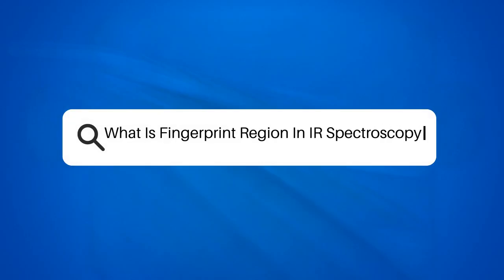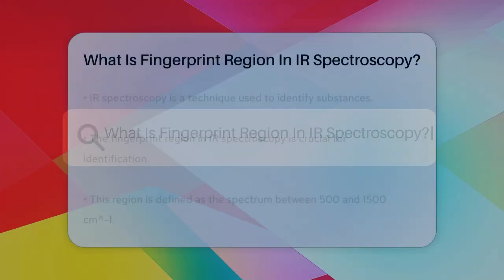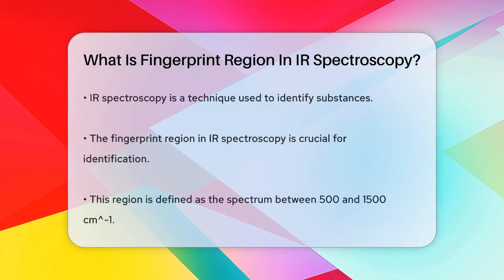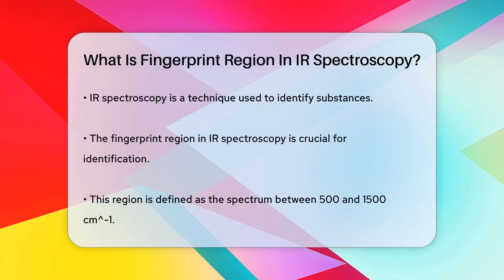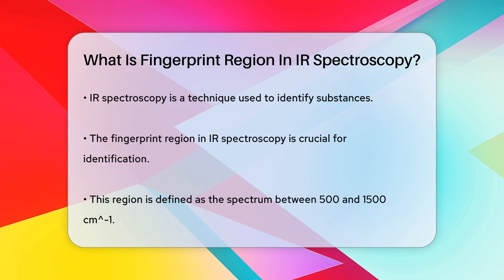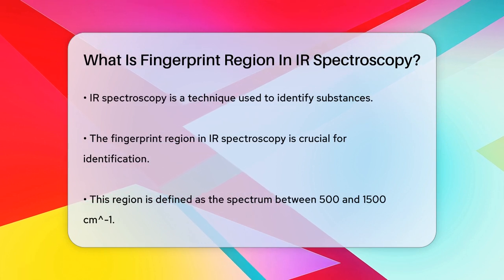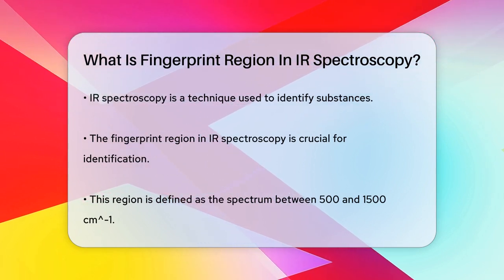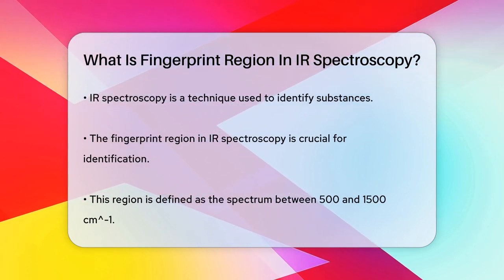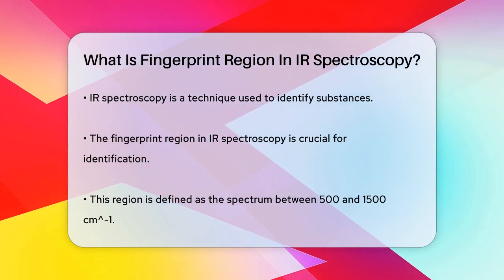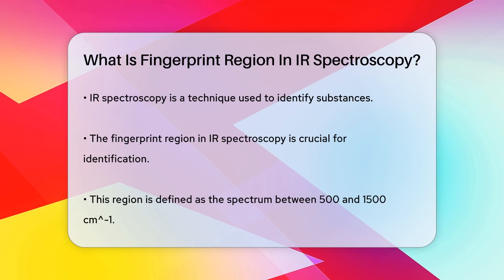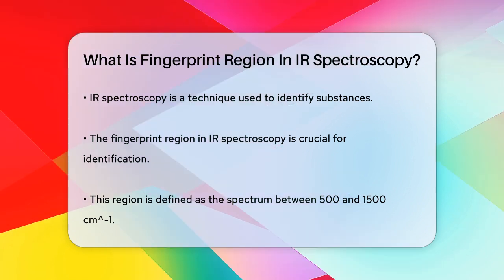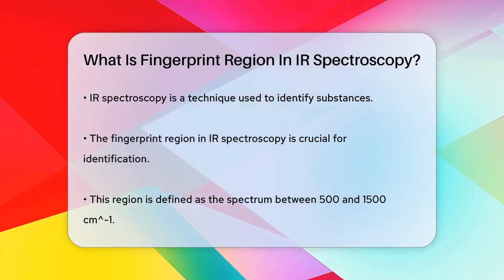What is the fingerprint region in IR spectroscopy? Imagine you have a mysterious substance and you need to figure out what it is. One powerful tool to help you do this is infrared IR spectroscopy. But within IR spectroscopy, there's a special part called the fingerprint region that's incredibly useful.